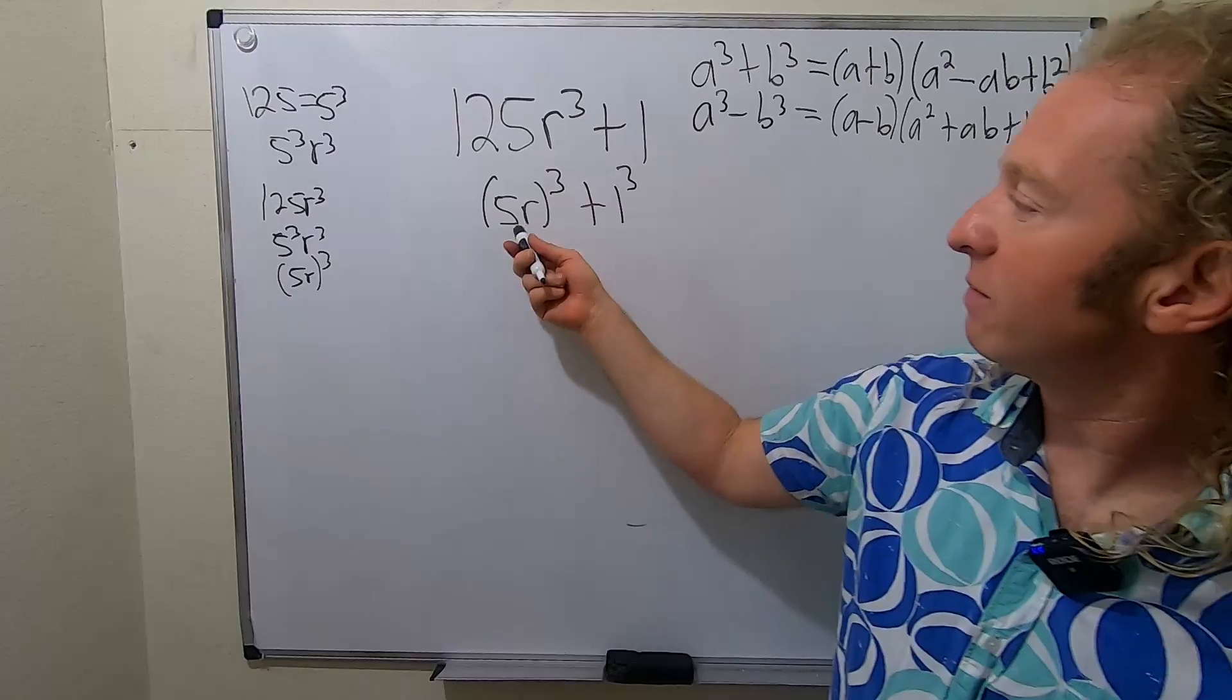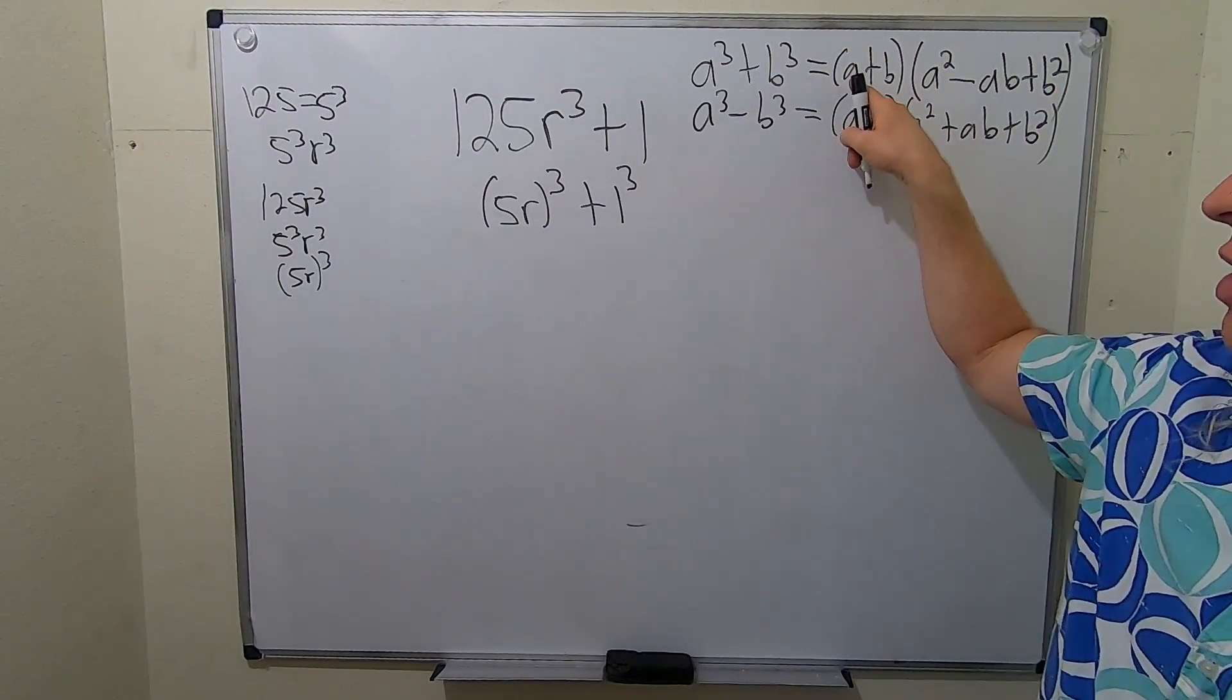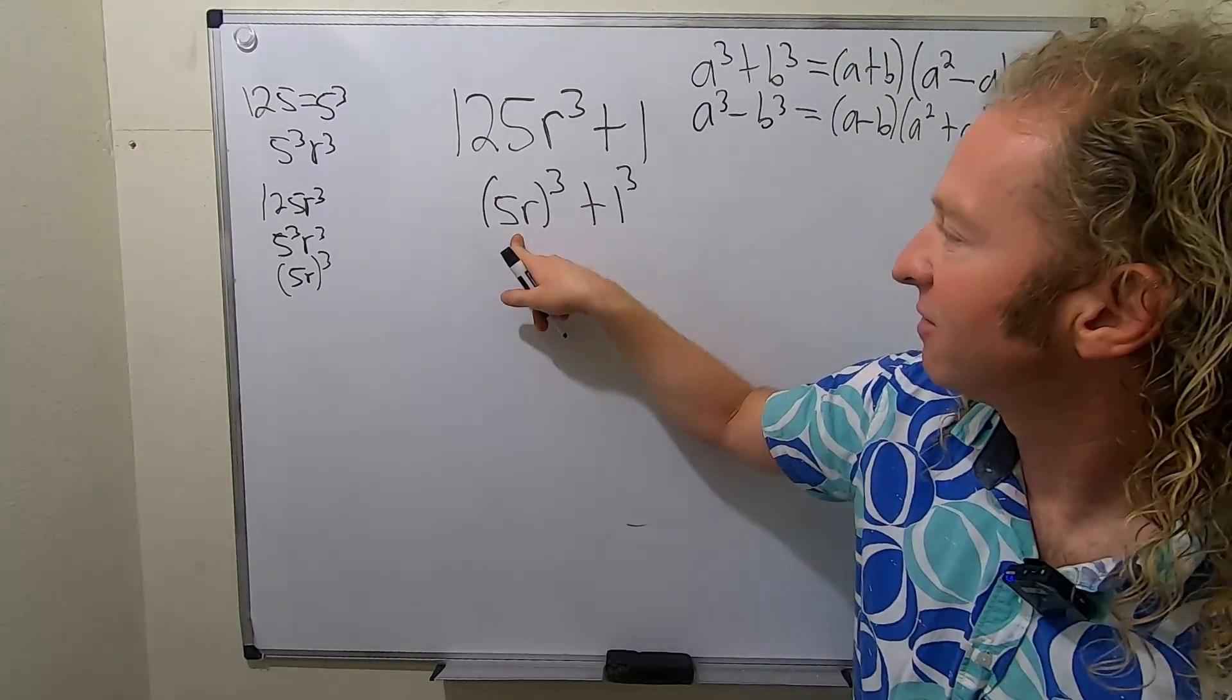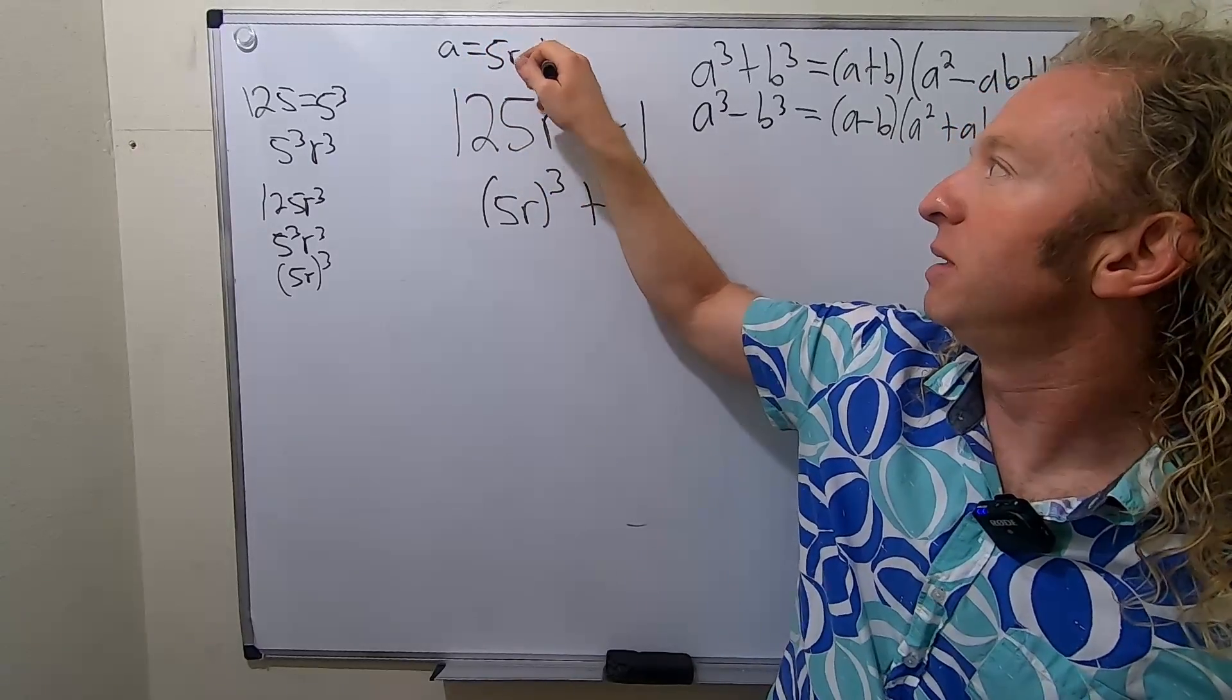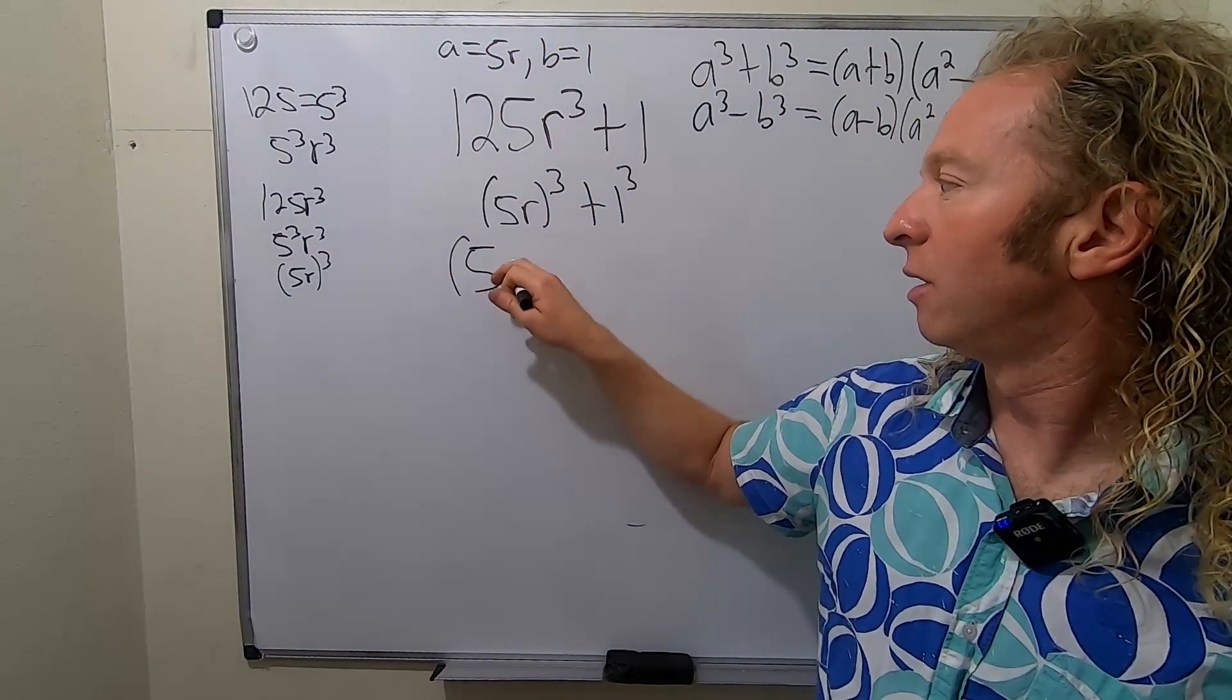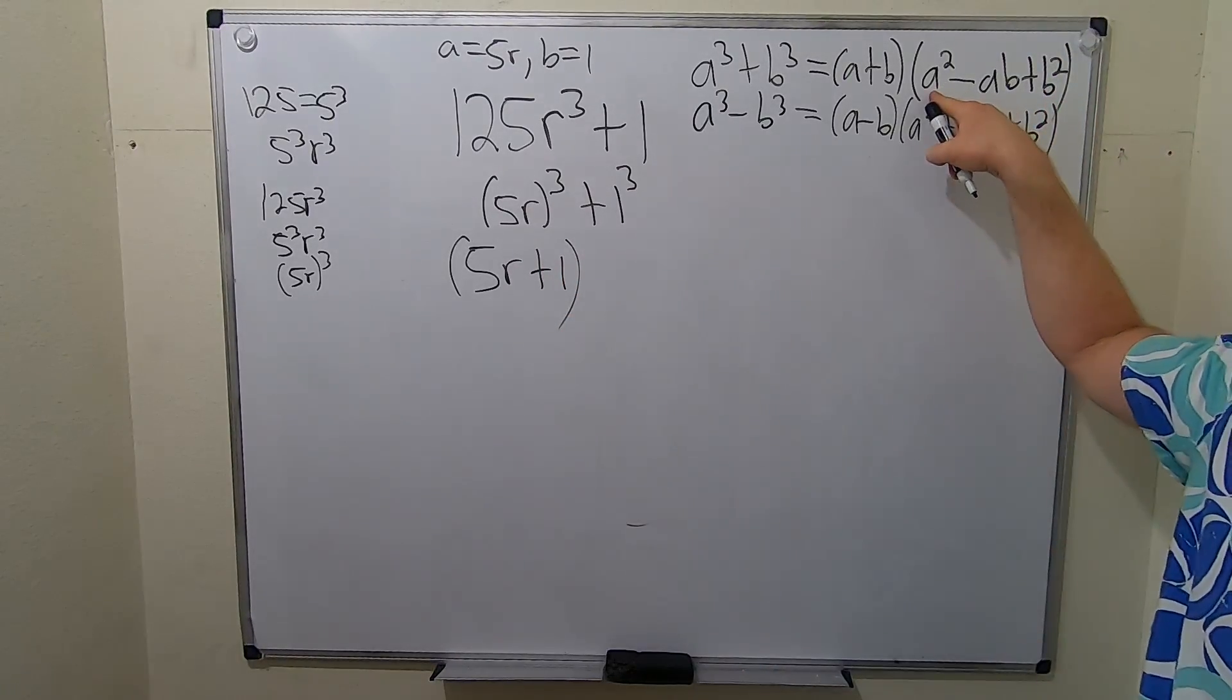So now A here is going to be 5R, and B is 1, right? So you just replace all of your A's with 5R's. So it'll be 5R + 1, right? Because A is 5R and B is 1. I'll write it up here. A is 5R and B is 1. So it'll be 5R + 1, right? 5R + 1. And then it's (5R)².